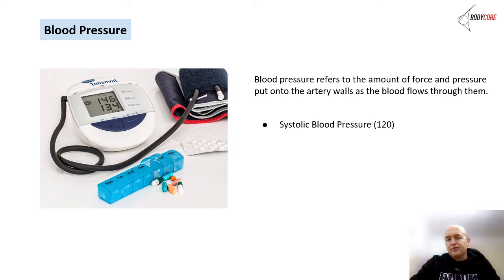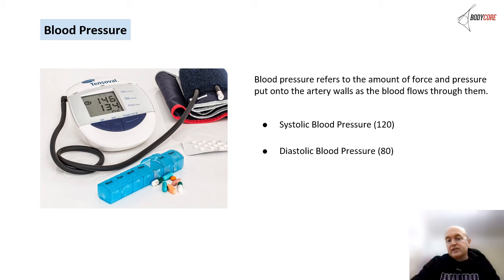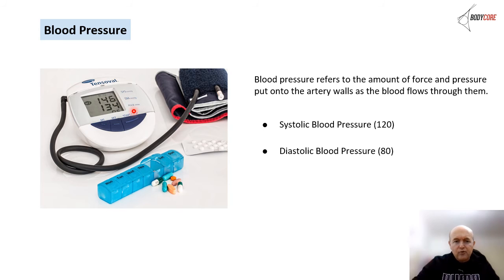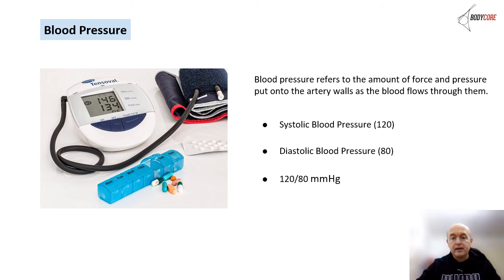Blood pressure has two parts. Systolic blood pressure — the stronger part of the cardiac cycle — is always the higher number, optimally around 120. Diastolic blood pressure is the lower number, optimally around 80. So an optimal reading is 120 over 80. Blood pressure is always measured in millimetres of mercury (mmHg). It can be measured with a stethoscope and sphygmomanometer, or very commonly with a digital electronic device.